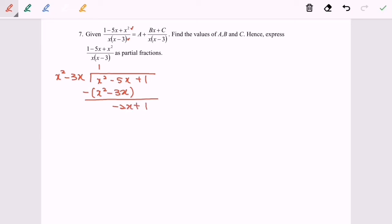So express the situation 1 minus 5x plus x square over x, x minus 3. It will be equals to 1 plus minus 2x plus 1 over x, x minus 3. So the value for A will be equals to 1, B will be equals to negative 2, C will be equals to 1. So that would be the part 1.